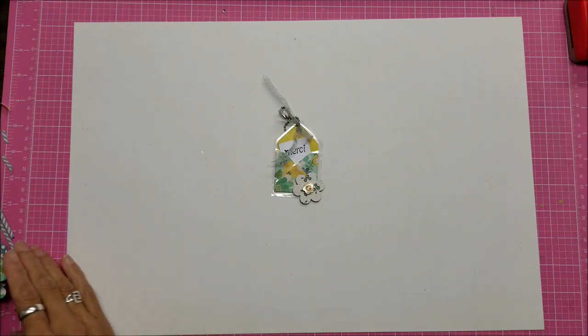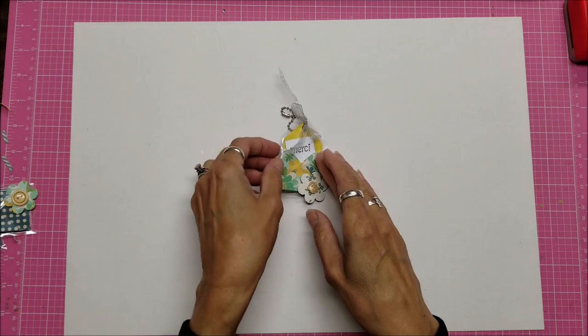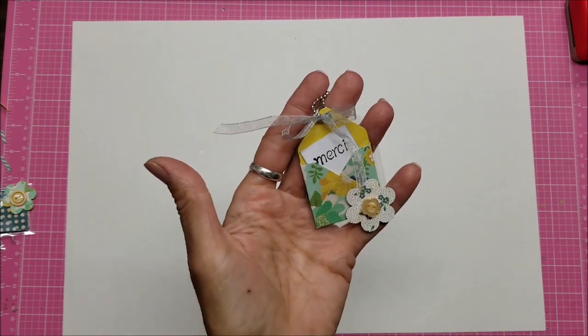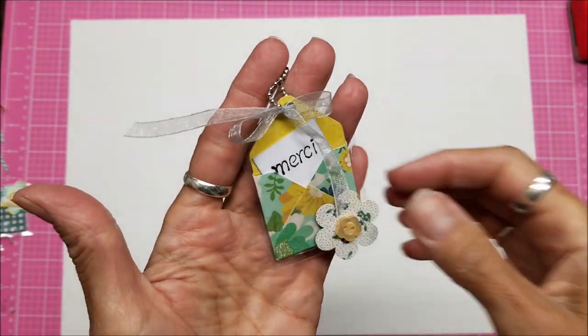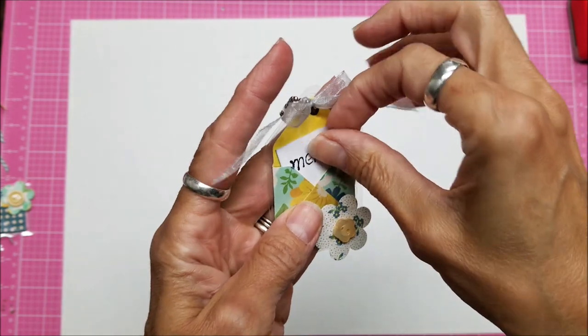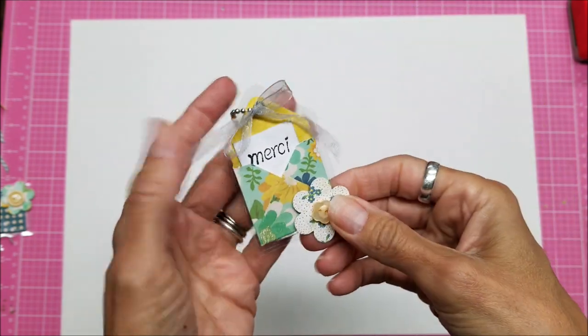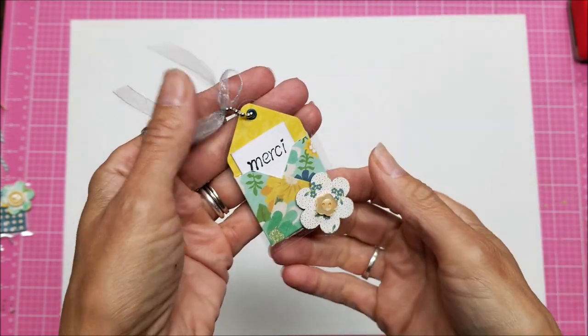Hello, this is Lolly. I have a project share today and that is a little miniature. Let's bring this up here. It's a mini envelope with a little card in it and the whole thing is laminated and I made it into a charm.